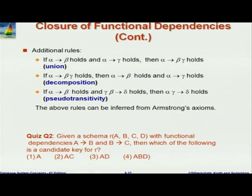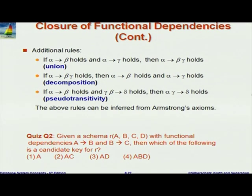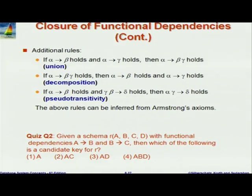The additional rules are: the union rule (combine right-hand sides when left-hand sides are the same), the decomposition rule (if alpha → beta gamma, then alpha → beta and alpha → gamma), and pseudo-transitivity (if alpha → beta and gamma beta → delta, then alpha gamma → delta).